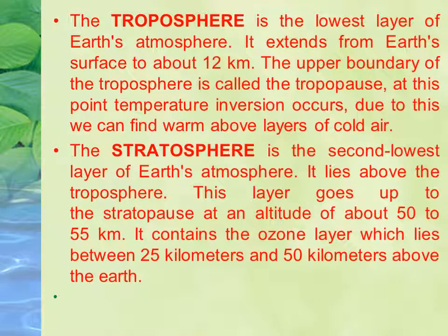Now we are going to discuss each of these layers briefly. The troposphere is the first and lowest layer, starting from the surface of the Earth. Its upper boundary is called the tropopause. At the tropopause there is a temperature inversion — normally temperature decreases going up in the troposphere, but at the tropopause, warm air sits below cold air. After the tropopause, the second layer starts, called the stratosphere, which extends up to about 50 to 55 km.